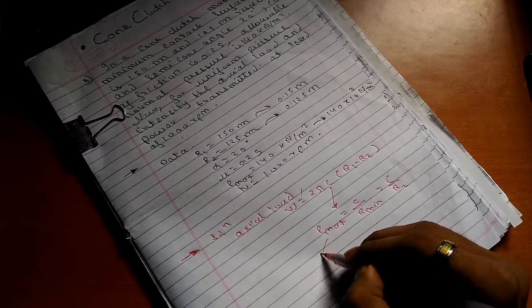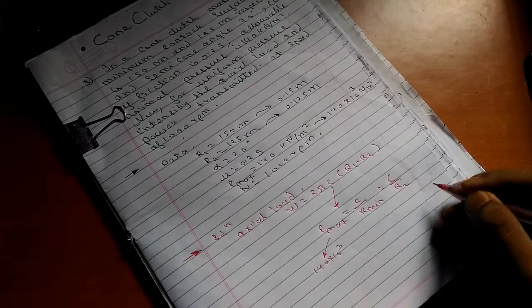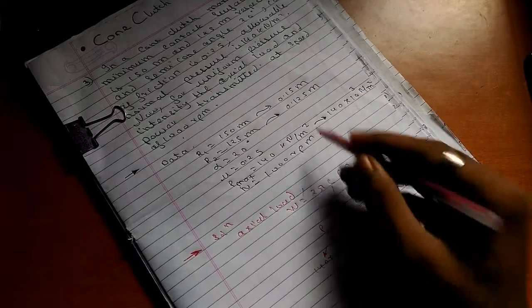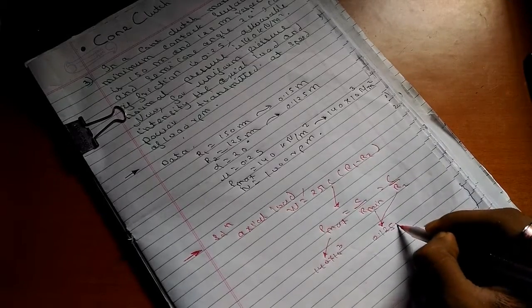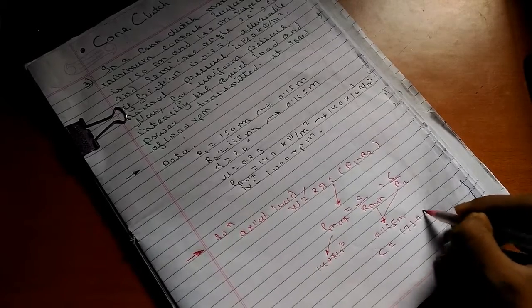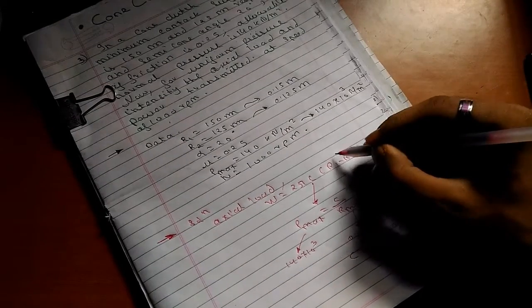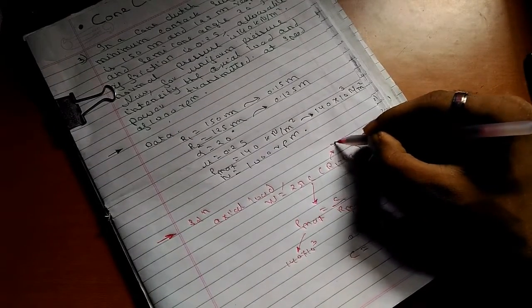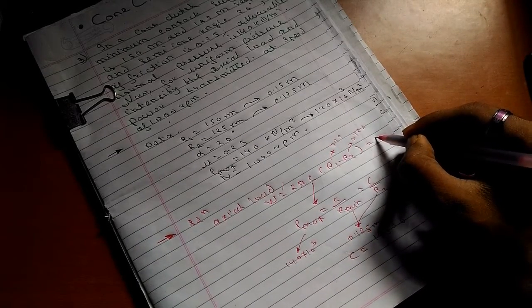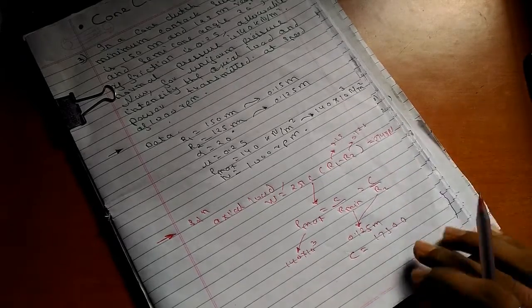We know P max is 140 times 10 raised to 3, and r minimum or r2 is 0.125 meter, so we get c. Correspondingly, by putting r1 as 0.15 and r2 as 0.125, we get W as 2748 newton.